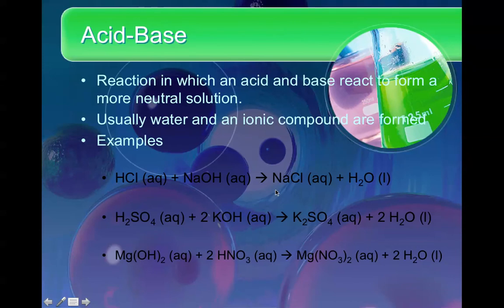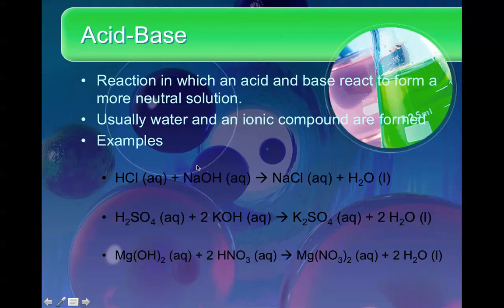Our final type of reaction is acid-base — a reaction in which an acid and a base react to form a more neutral solution. It doesn't necessarily go all the way to neutral, but it's more neutral than either of the two started out. Usually you're going to produce water and some kind of ionic compound, which we call salts. At this level, it will always form water and an ionic compound — we won't worry about more complicated forms of acid-base reactions.